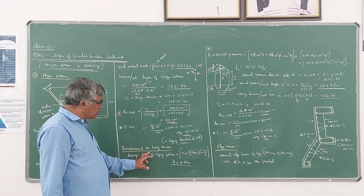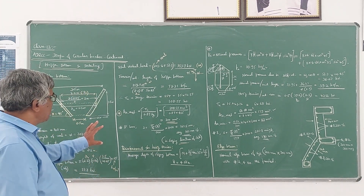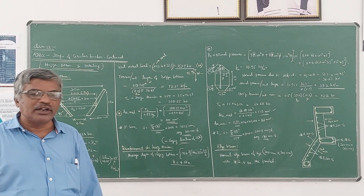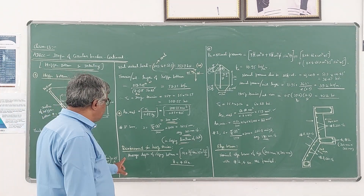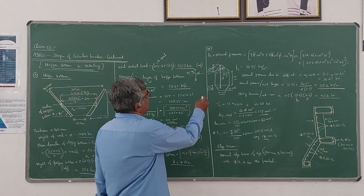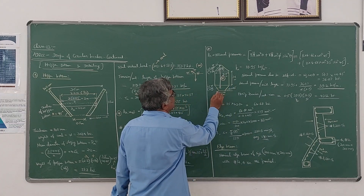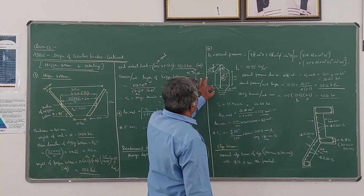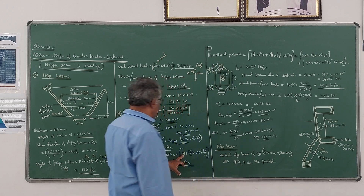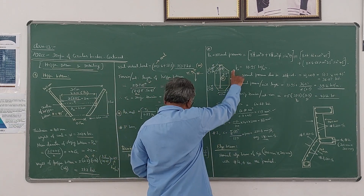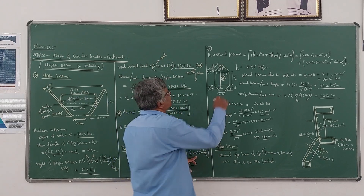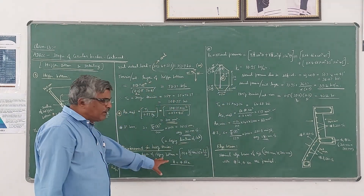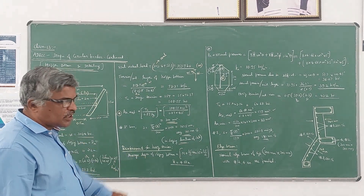Now reinforcement for the hoop tension has to be calculated. This reinforcement is provided along the sloping direction of the slab. In the other direction, we have to provide reinforcement for the hoop tension. For that we have to calculate the average depth of the sloping bottom, capital H. It is from the center of this hopper bottom to the top, consisting of 3 parts: 3.1 is this value, plus 3.5 by 2 tan 25 degree is this height, plus 1.5 by 2 is this height. Adding those 3 parts gives the average depth of sloping bottom, capital H, which comes out to be 4.66 meter.